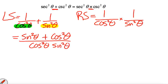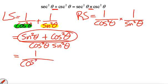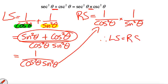Now the top, again, Pythagorean identity, 1 over cos squared theta sine squared theta, which is the same as the right side. Therefore, left side equals right side.